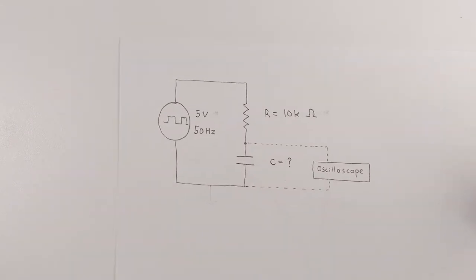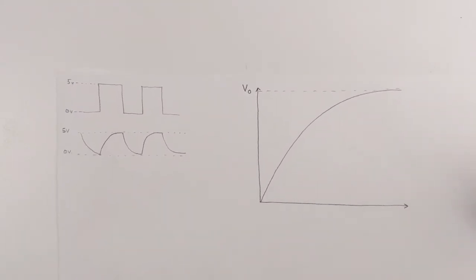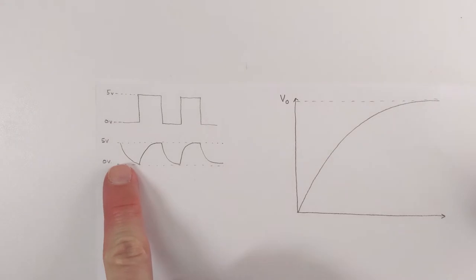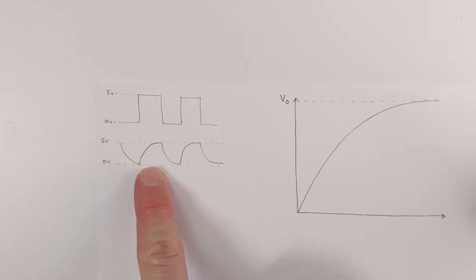So when you do this, you should see something like this on your oscilloscope. This top one is the 50 Hz square wave. That's what it would look like. And then this is what the charging and discharging would look like on that capacitor.